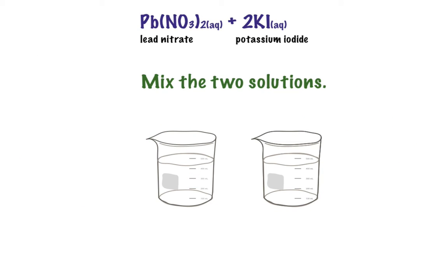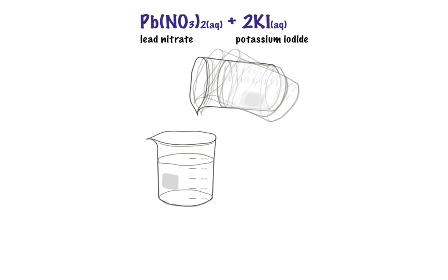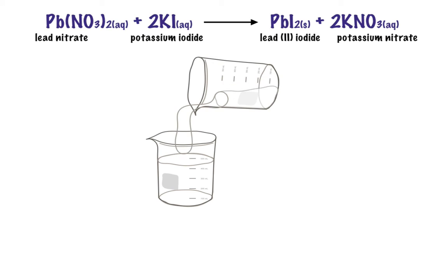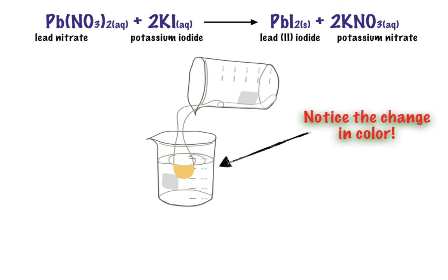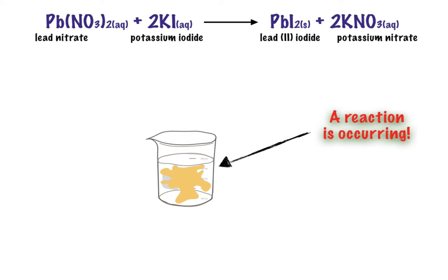Something interesting happens when I mix these two solutions. As I pour potassium iodide into my lead nitrate, you're going to see something interesting happening. You're going to notice a change in color — a reaction is occurring.